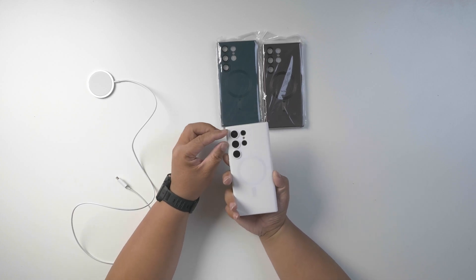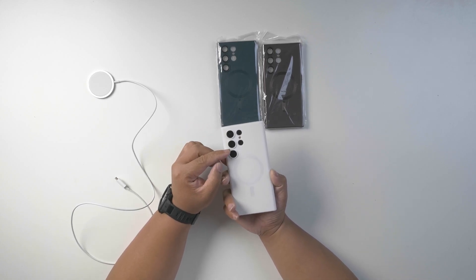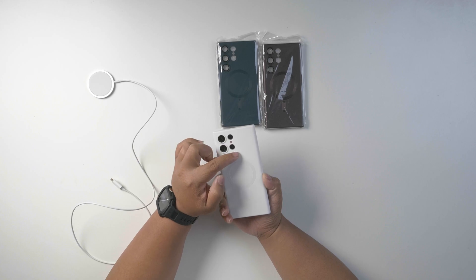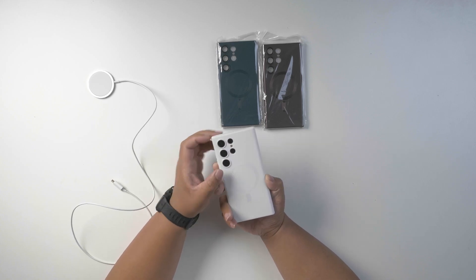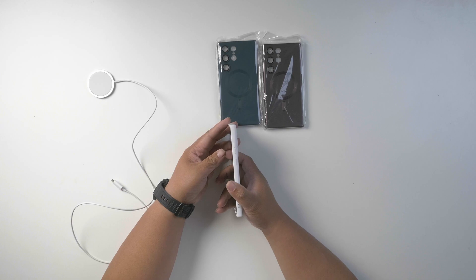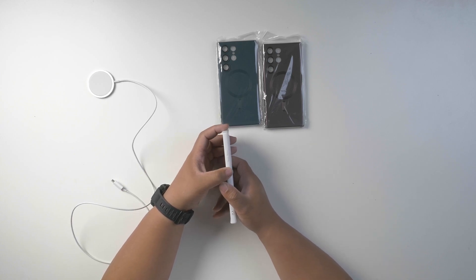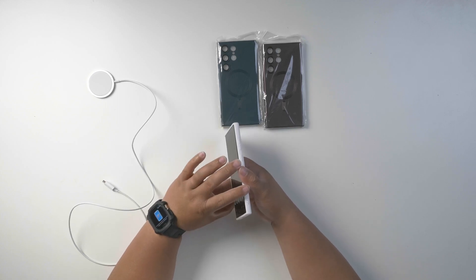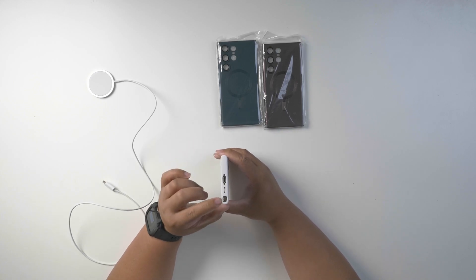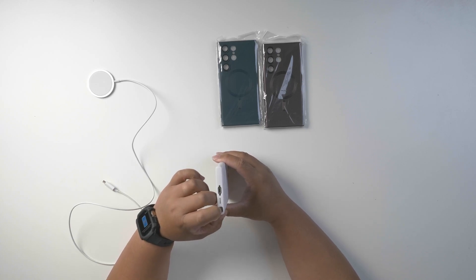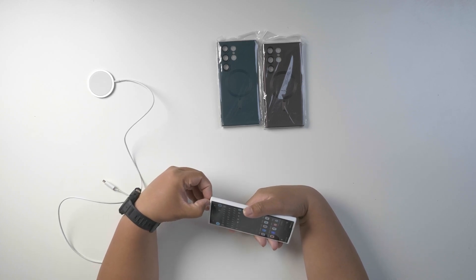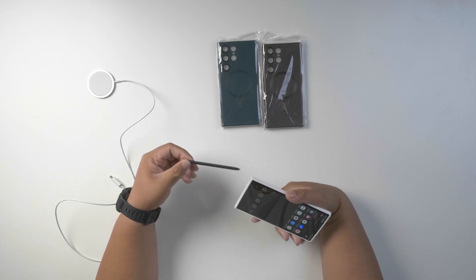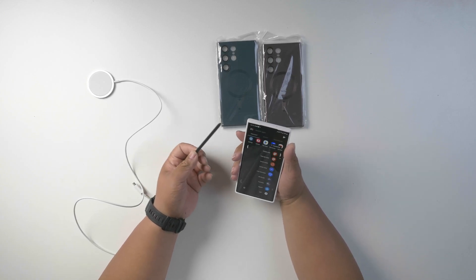There it is. The cutouts for the cameras are really nice as well. Nothing is blocking there. The buttons on the side are covered and protected, has a two-hole loop there as well if you like that kind of stuff. On the bottom the S pen is very accessible as well without any issues. Pretty good.